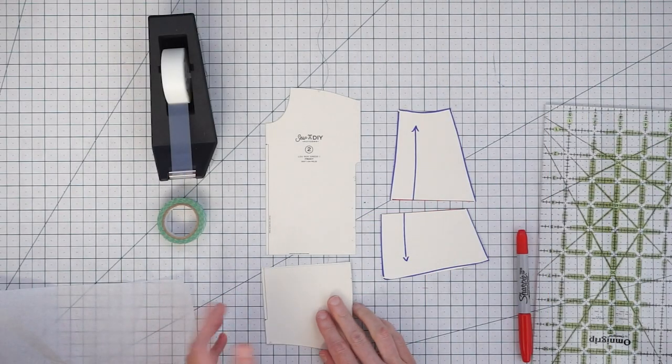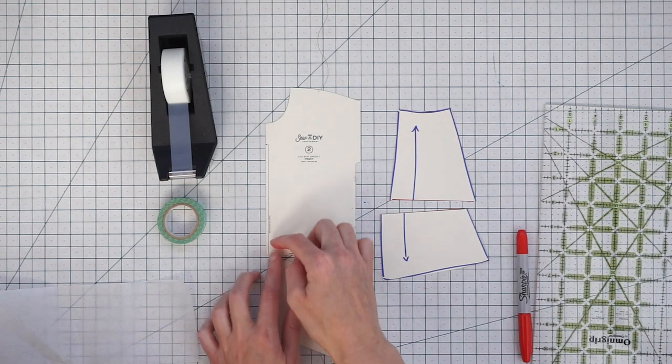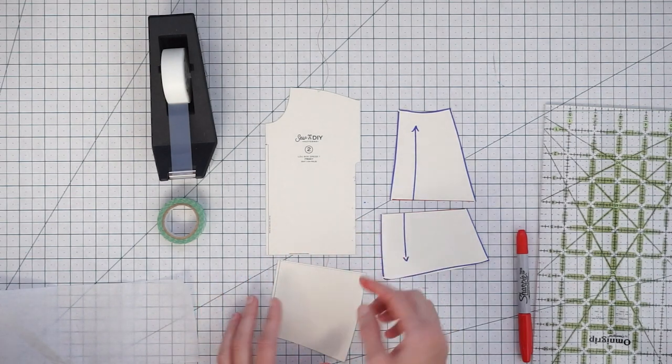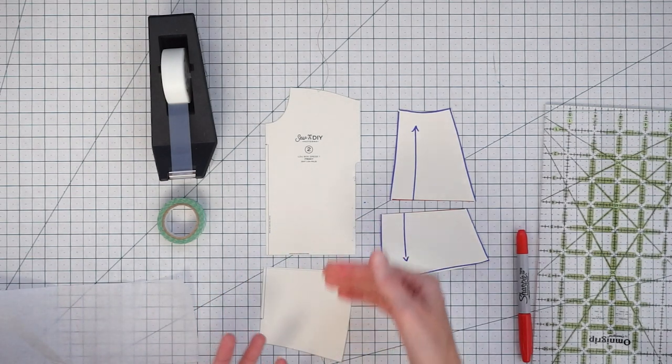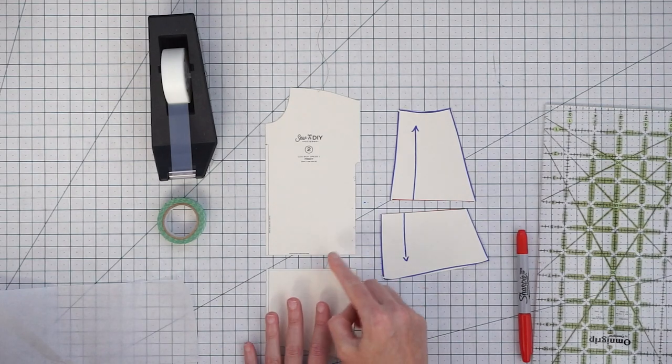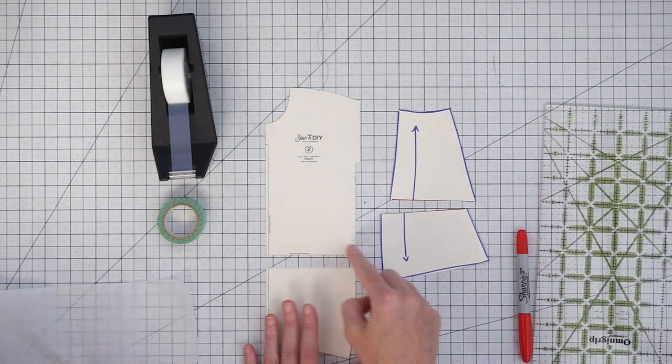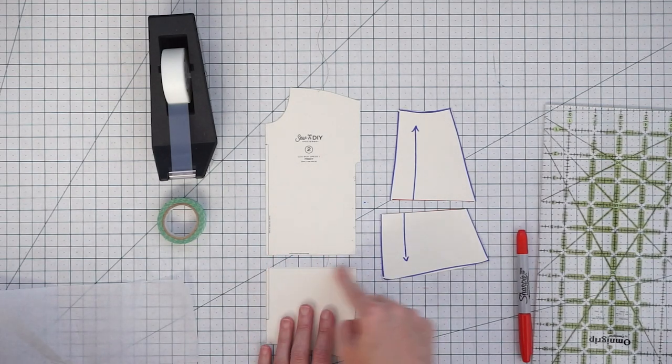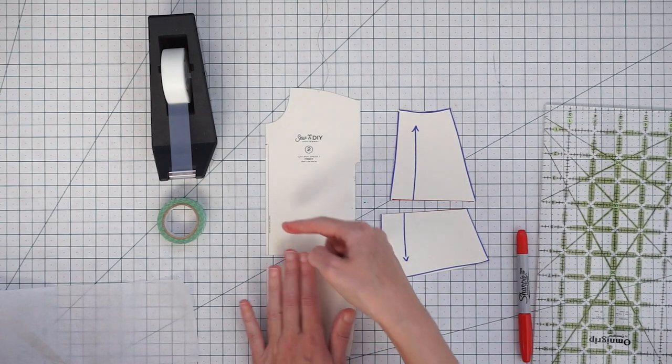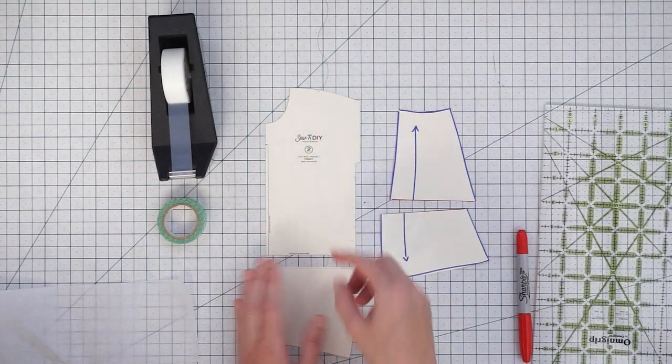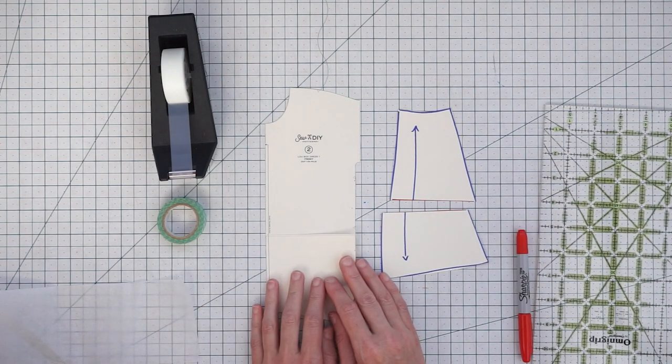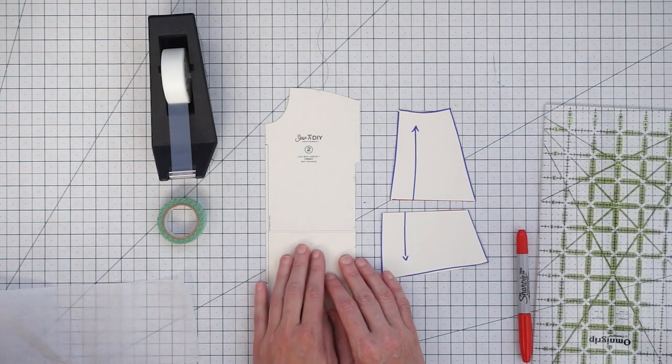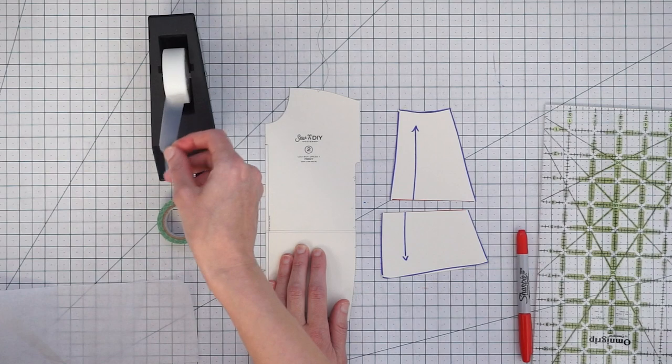Then what you want to do is draw in a little line as a guide to indicate how much you want to shorten the pattern. And you want to make sure that your little guide is parallel to this cut line and perpendicular to the fold or your grain line.